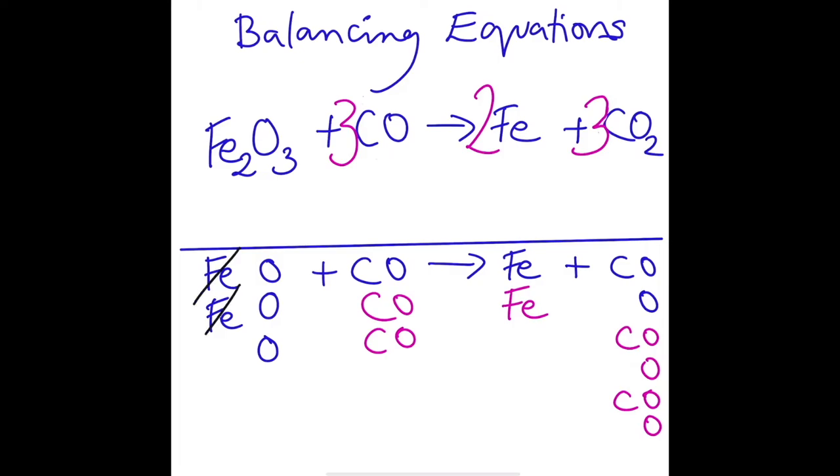We've got one, two irons in our reactants cancelling one, two irons in the products. One, two, three, four, five, six oxygens in our reactants. One, two, three, four, five, six oxygens in our products. And lastly, one, two, three carbons in our reactants and one, two, three carbons in our products. All righty, I hope that made it easy.